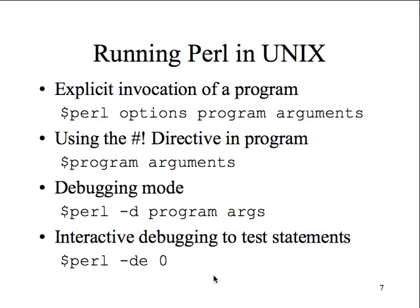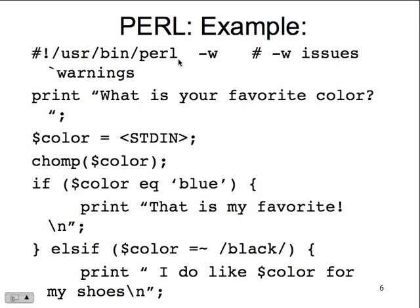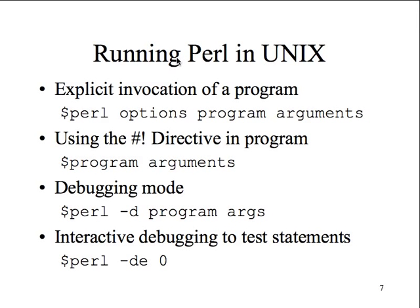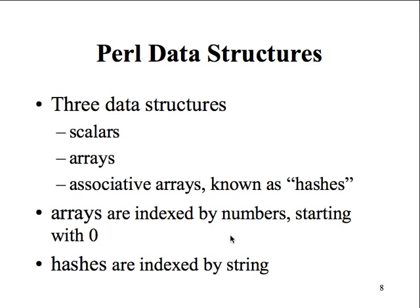Running Perl in Unix: explicit invocation means typing 'perl' followed by options and the program name. Or we can make the text file executable by adding the header at the top, then double-click or type the filename to run it without bringing up the Perl interpreter explicitly. We can also type 'perl', press return, get a prompt, then load and run a file there. In debugging mode, use the minus D switch for interactive debugging and testing.